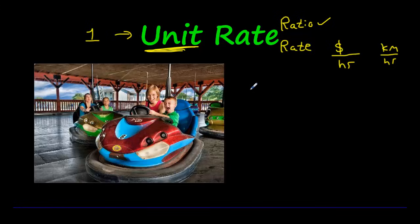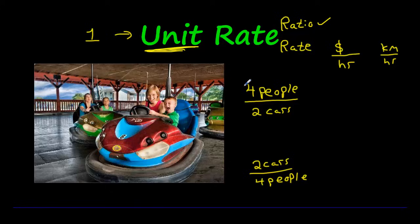You may have said there's four people in two cars, or maybe you said there are two cars for four people. Either of these is correct. But our job is to take these rates and turn them into unit rates. I need to turn this into a unit rate. The unit, the one, has to be in the denominator.